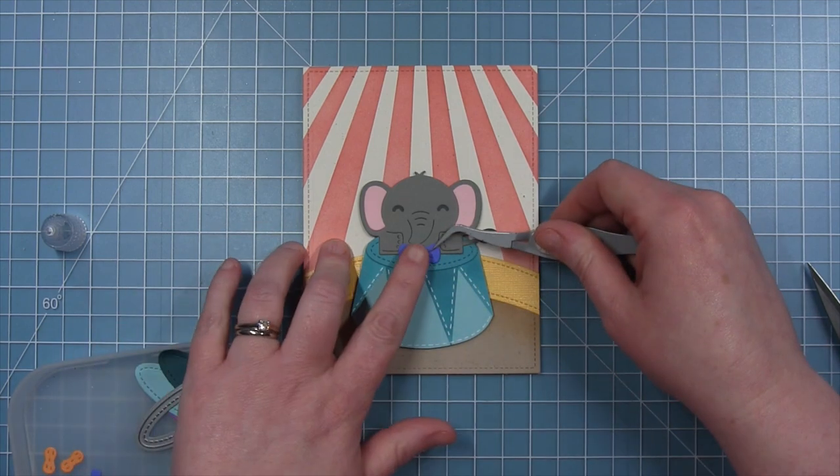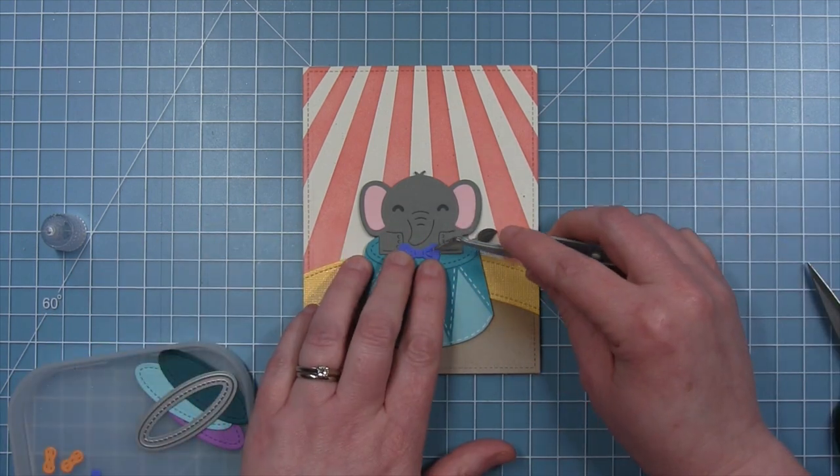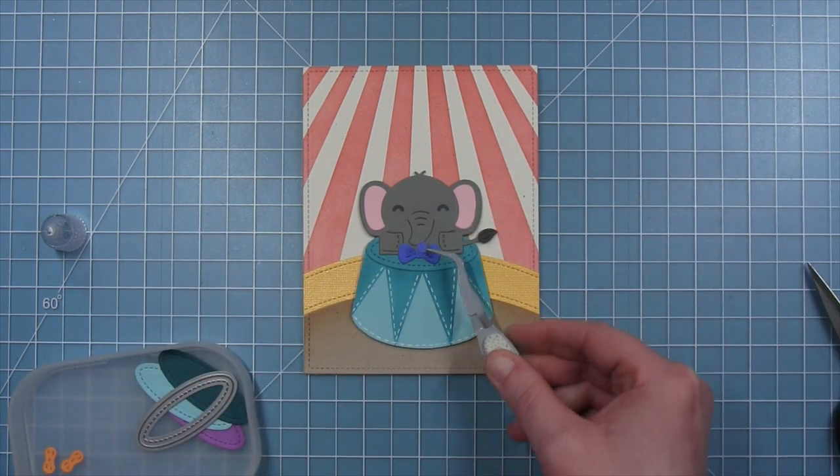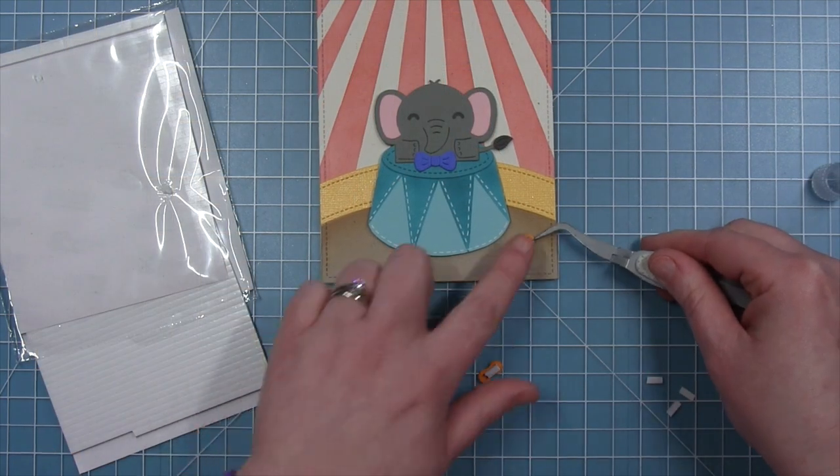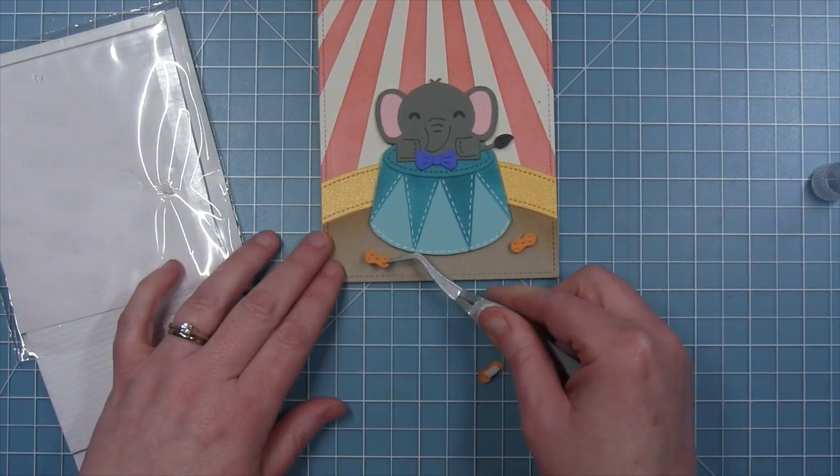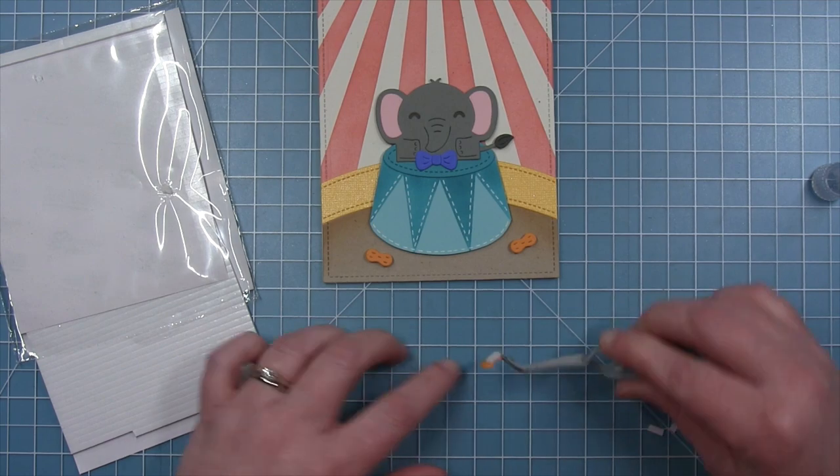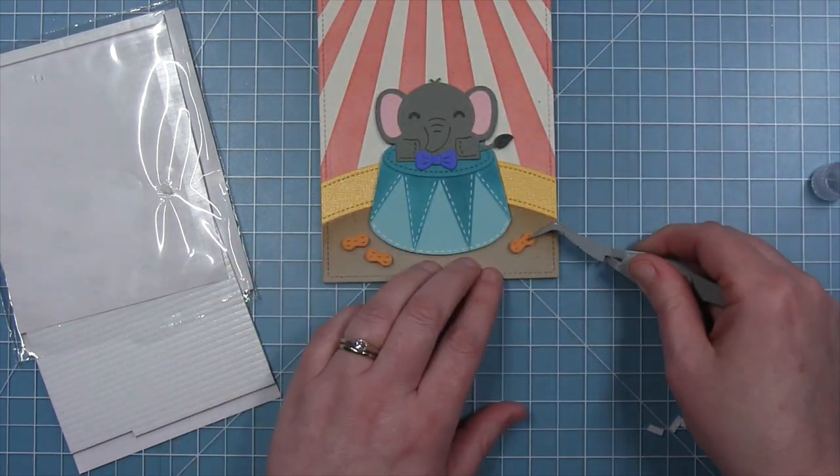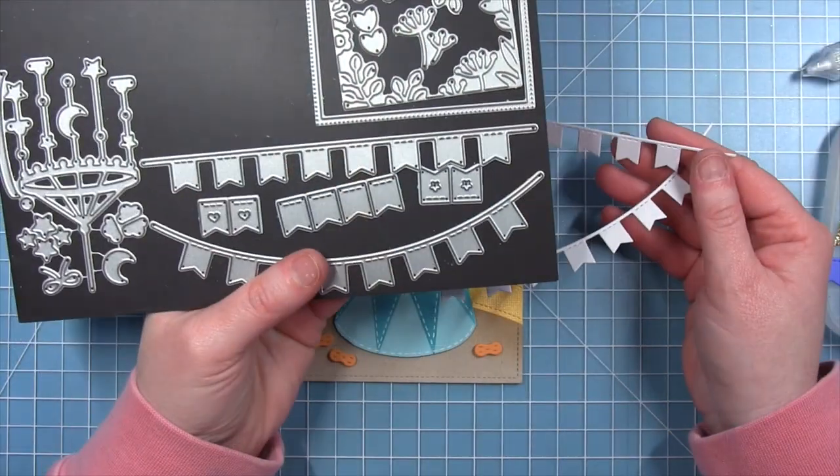Now here is that bow tie that I cut out with a die. And I'm using it as a bow tie this time instead of a little hair bow like I did on the box. And then for my peanuts, I cut them from orange cardstock so that they looked like circus peanuts. Like the circus peanuts candy that you buy.